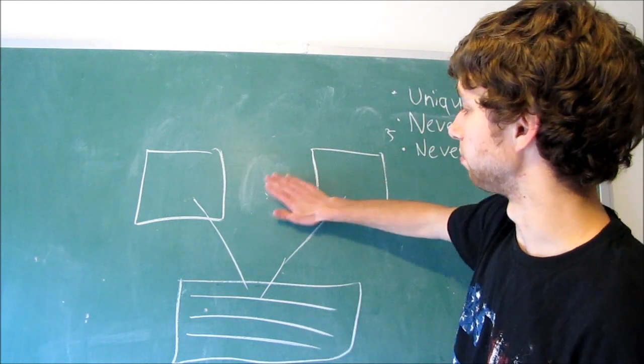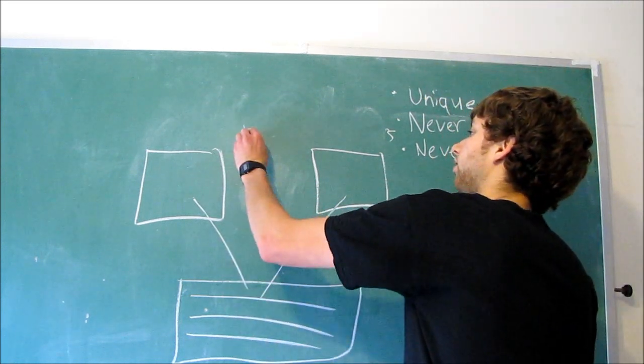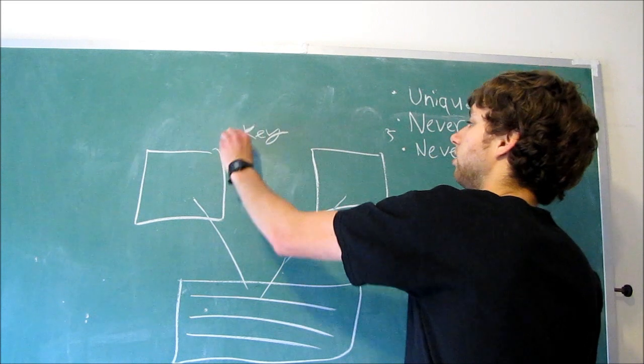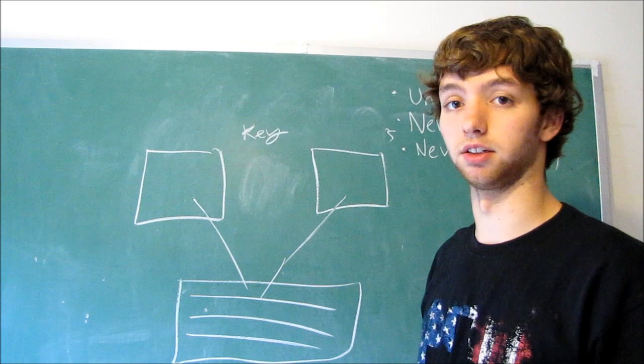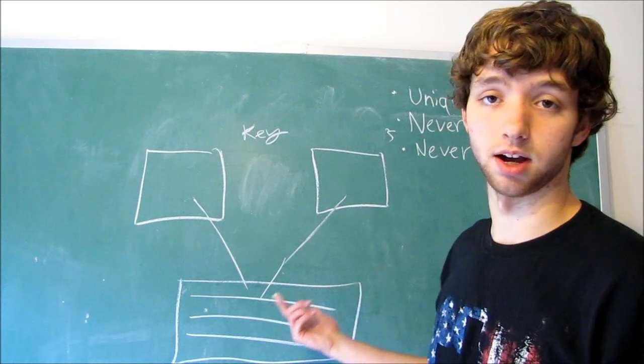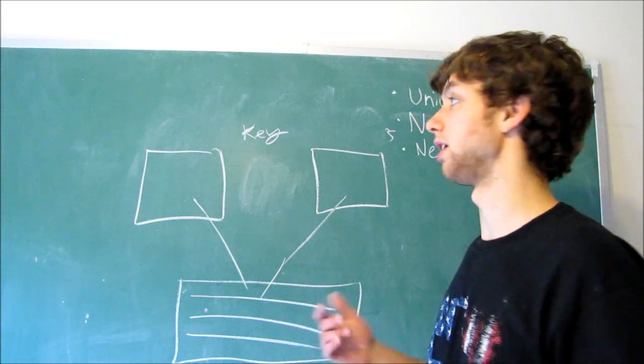When we make a primary key, or just a key for now, well, we're defining an index so the database can easily access the order of our data and combine things. So that is how indexes relate to keys. Key is a type of index.